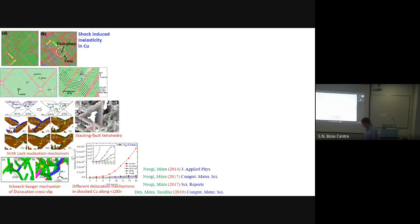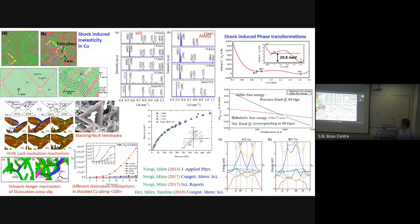Another material we studied is FCC copper under shock. Projecting a shockwave into copper generates significant dislocation motions, including Hirth lock nucleation, Frank-Read sources, and various dislocation types, as well as twin planes. We did numerical simulations to match experimental observations. Interestingly, we also observed a shock-induced phase transition in copper.